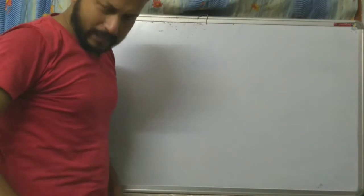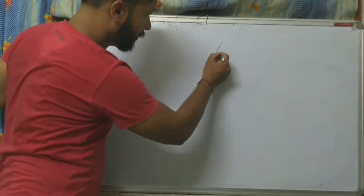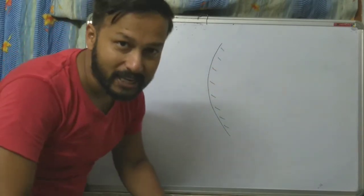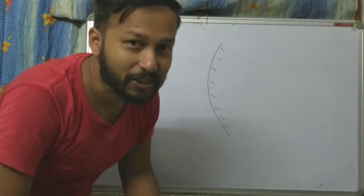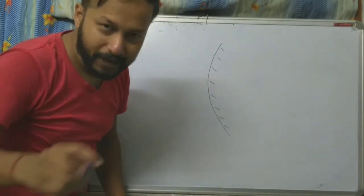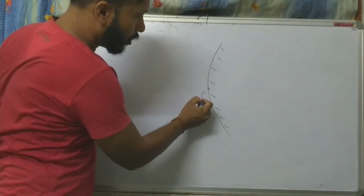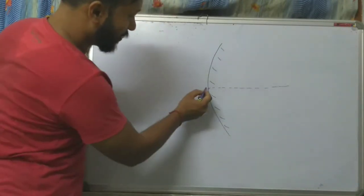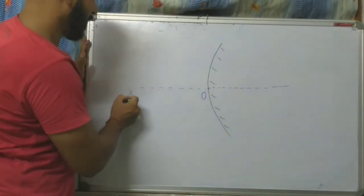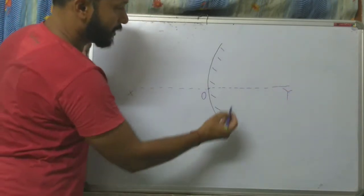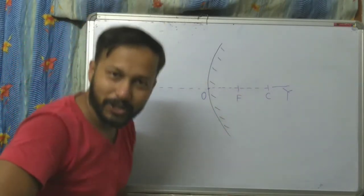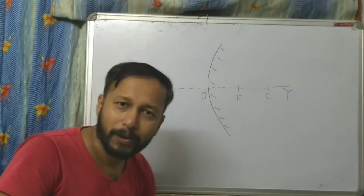Let us draw it for you. This is my mirror — it's a convex mirror. We know that this point is called the pole, and X-Y is the principal axis. This is called the center of curvature, and this is called the focus point. All of this we discussed in the first part of this video.